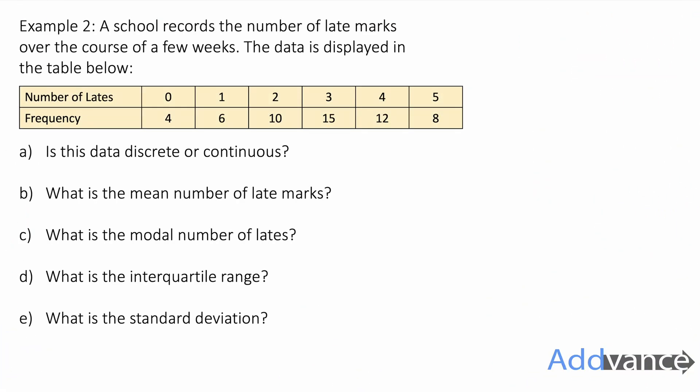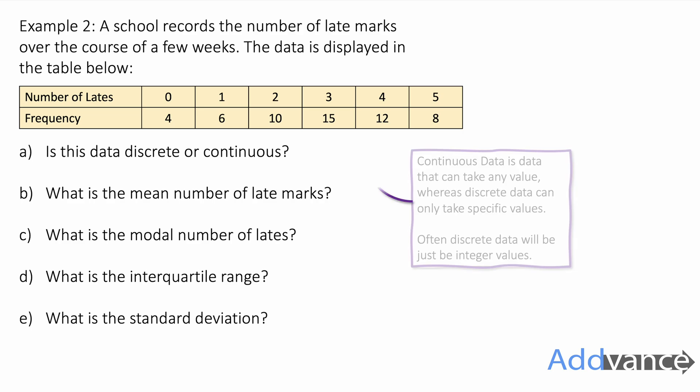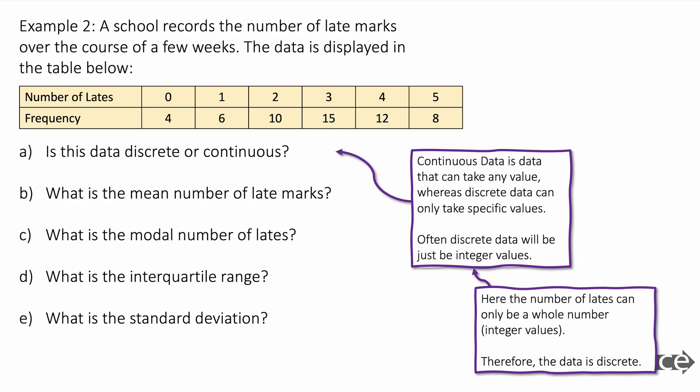Now, a school records the number of late marks over the course of a few weeks. The data is displayed in the frequency table below. The first question says, is the data discrete or continuous? Well, continuous data is data that can take any value, whereas discrete data can only take specific values. Often discrete data will be just integer values. Integer means whole number. Here, the number of lates can only be a whole number. Therefore, the data is discrete.